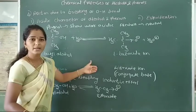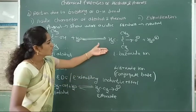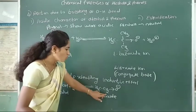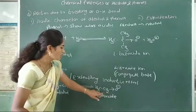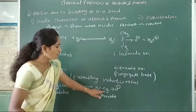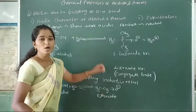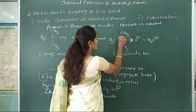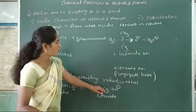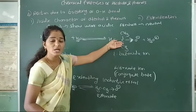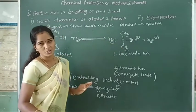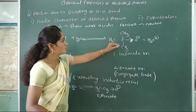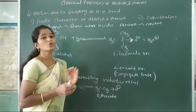Which alcohol shows more acidic character? In the ethoxide ion, oxygen is attached to only one alkyl group. But in tertiary butoxide, oxygen has three methyl groups attached. As the number of alkyl groups increases, the stability of the alkoxide ion decreases. Therefore, the acid strength of butoxide ion is less than that of ethoxide ion.